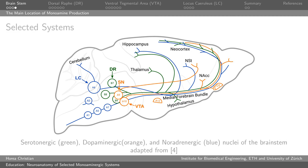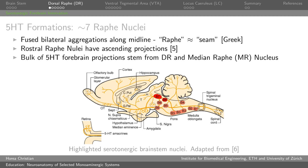We look at these nuclei in particular because ascending projections mean a wider efferent field — they project to more parts of the brain, making them more interesting for biomedical modeling and more likely to be involved in higher-level functions, compared to descending pathways primarily involved in motor or sensory activity. The serotonergic formations comprise seven nuclei called the raphe nuclei — raphe meaning 'seam,' as they run along the midline of the brain. These nuclei do not tend to be lateralized, which makes them special among brain structures. The rostral raphe nuclei have the highest percentage of ascending projections.